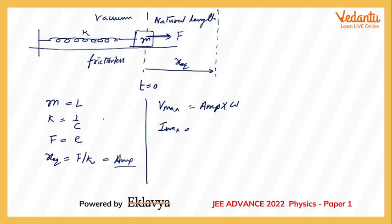Amplitude will be what? F by k is the amplitude in mechanics, so here it is going to become E divided by 1 upon C, so this plays the role of amplitude. Omega will be root of k by m, but we can directly substitute the omega of the circuit. We can also go by root k by m. If we do that, we will end up getting 1 upon LC root of 1 upon LC. So that is what we are looking at.